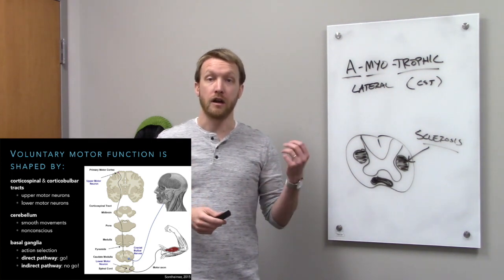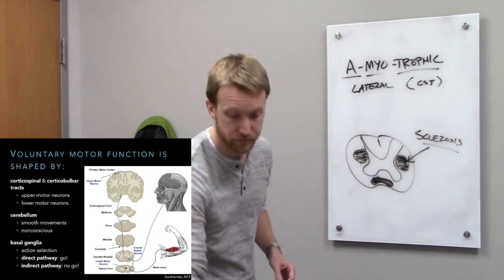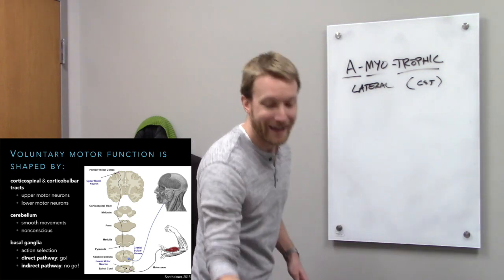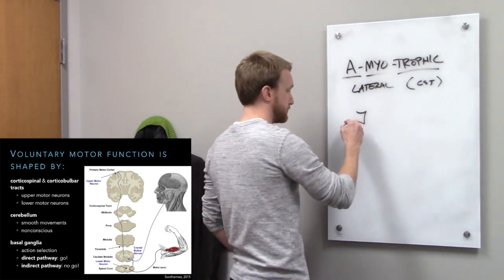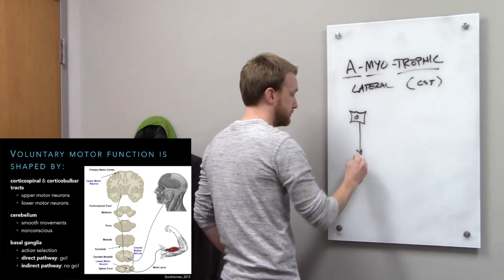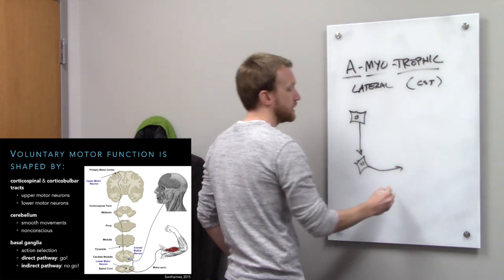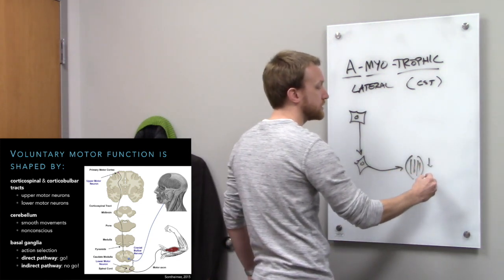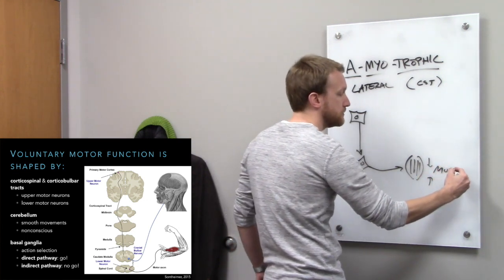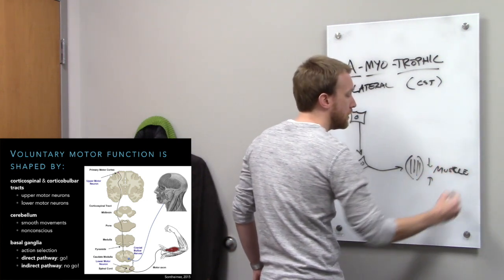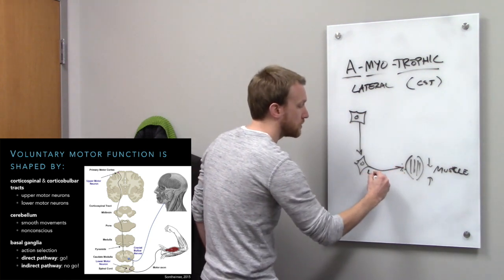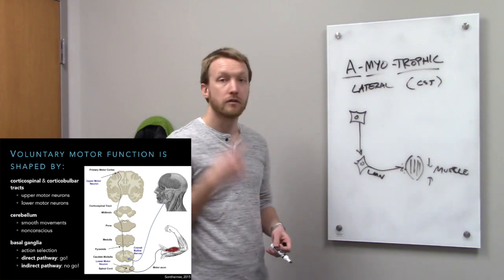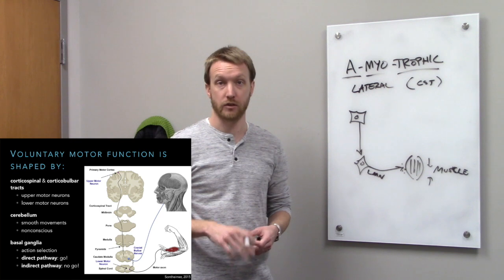What makes an upper motor neuron an upper motor neuron is that it's not directly controlling the muscle. Upper motor neurons indirectly control muscles by activating lower motor neurons — it's always a two-step process. In order to get movement — that is, contraction of the muscle — we have to have the release of acetylcholine by our lower motor neuron: in the spinal cord for the body, or in the brain stem for the head — that's the corticobulbar tract.